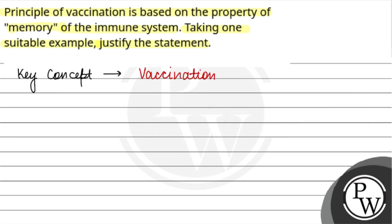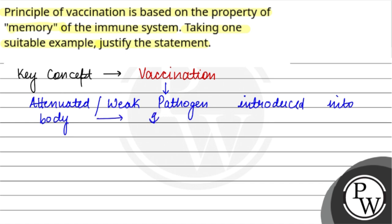Now let's try to understand, first of all, what is vaccination? It is a preparation in which attenuated and weak pathogen is introduced into the body, against which immune response is generated.